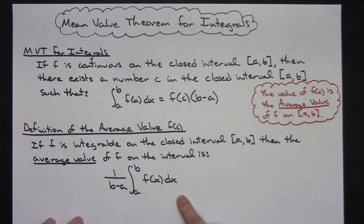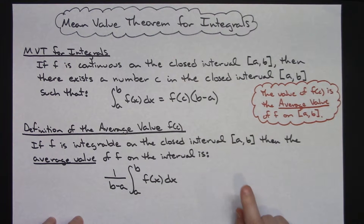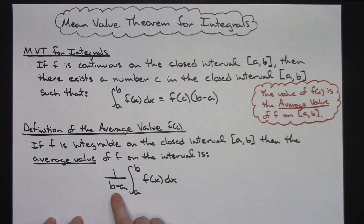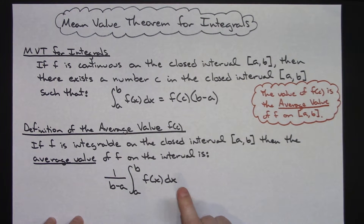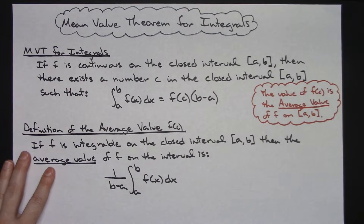So this is the average value. What this definition tells us is that the area under the curve of f(x) on that interval from a to b is equal to the area of a rectangle whose width is b minus a and whose height is equal to that average value. That may be hard to comprehend, so we're going to write that down and then look at it in picture form.